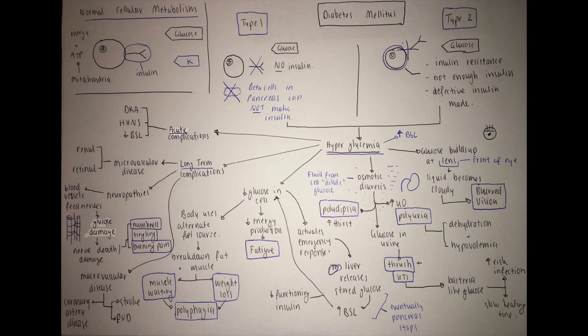Type 2 diabetes is where there's often insulin made, but it's not enough. The insulin that is made is defective, so it's dodgy, it doesn't work properly, or the cell itself is resistant to the insulin that's being made. Again, we've got glucose in the bloodstream and the cell isn't producing energy.